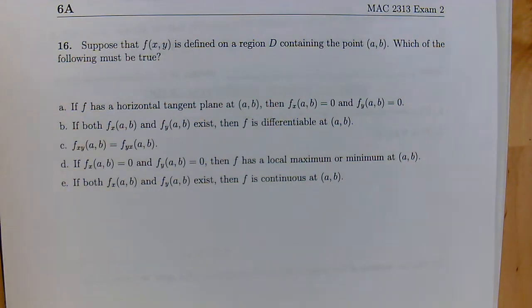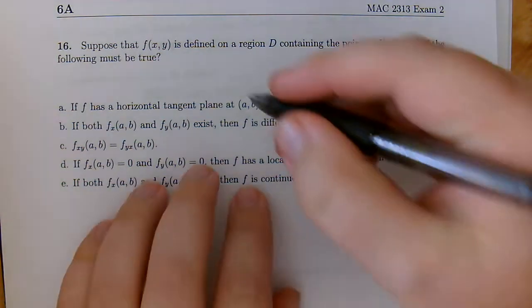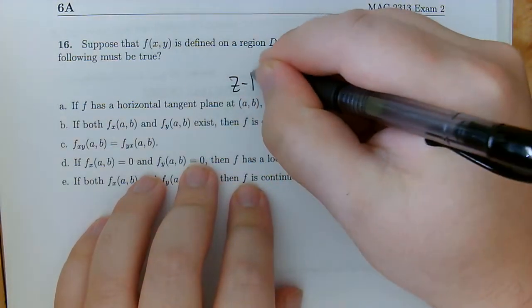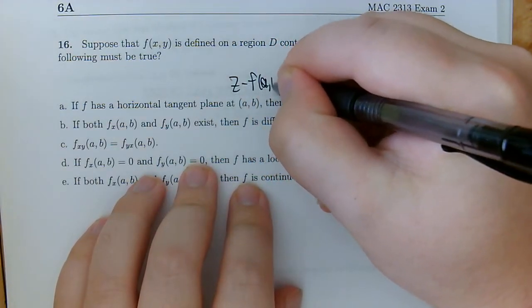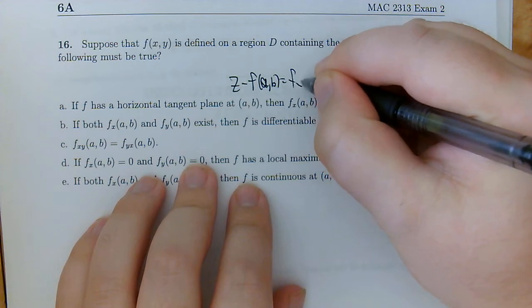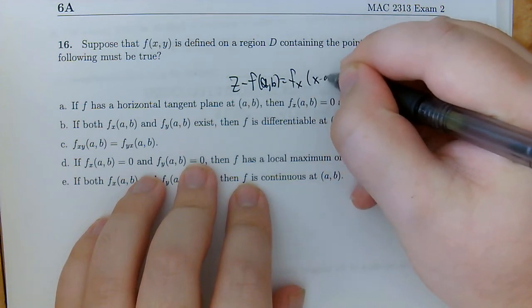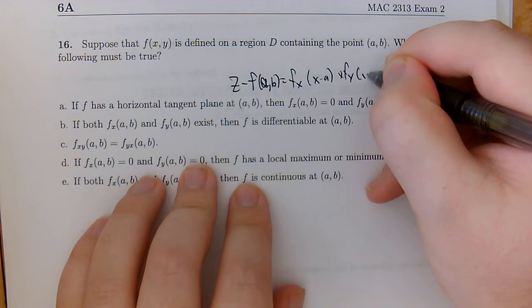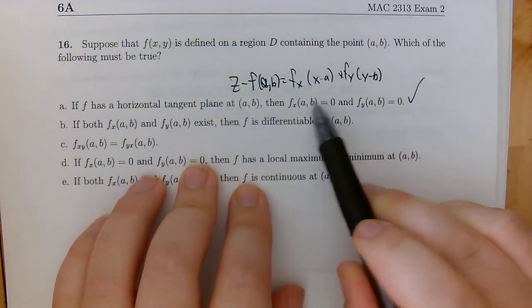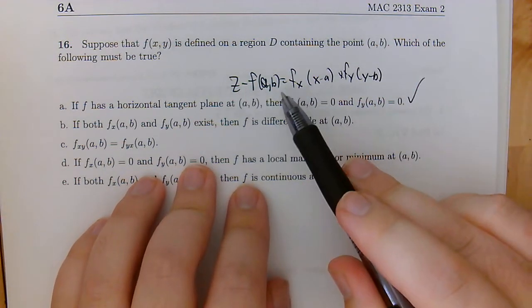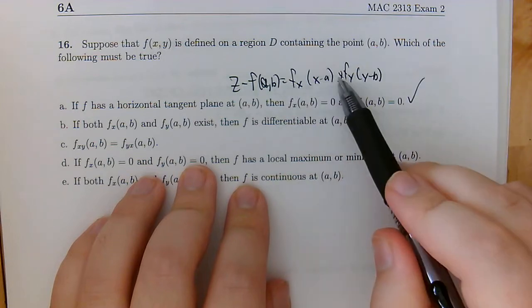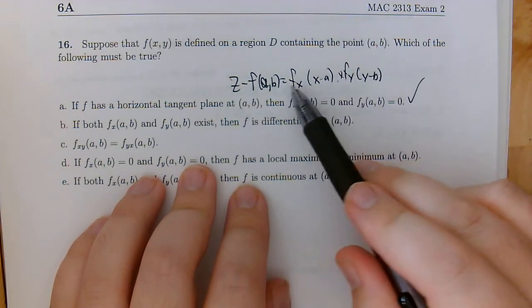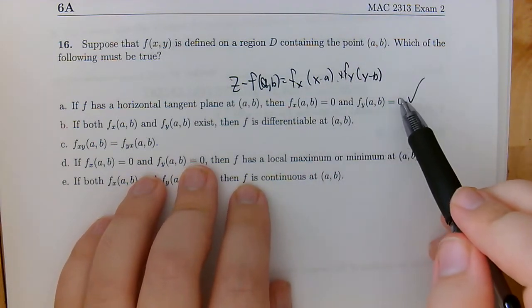All right, so right away, actually, we found our true statement. Because remember, the definition of the tangent plane is this: we have z minus f(a,b) is f_x times (x minus a) plus f_y times (y minus b). So if we want to be horizontal, we just want z equals something, we need both of these to be 0. So that means we're going to have a true statement here.